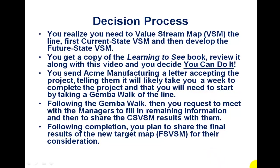In your lean training, you've learned a little about value stream mapping, and you realize that to accomplish this job you first need to map a current state value stream and then develop the future state value stream map. The current state just tells you what the process is doing now, and the future state is what you can move towards to get better. You get a copy of the 'Learning to See' book, review it along with this video, and say: you can do this.